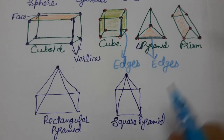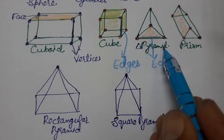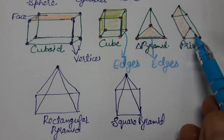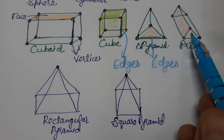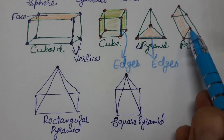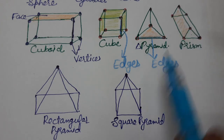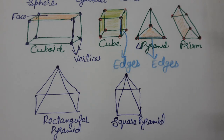Similarly, a prism can be a triangular prism or a rectangular prism, depending on the shape of its base. I hope you understood what three-dimensional shapes are. Thank you so much for watching the video.